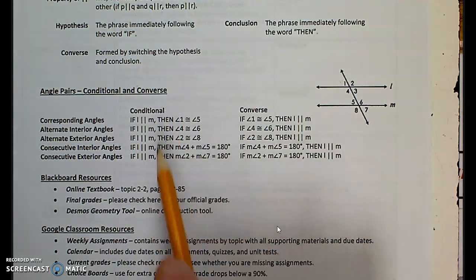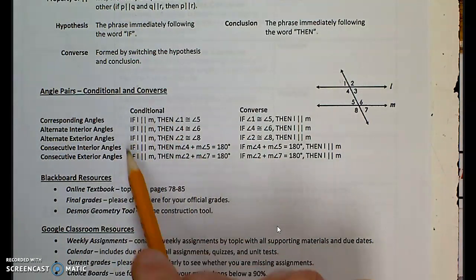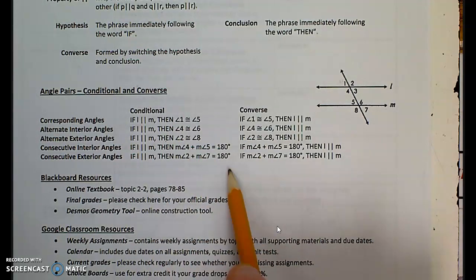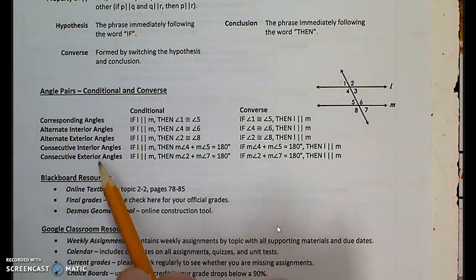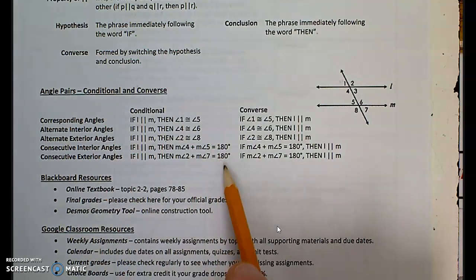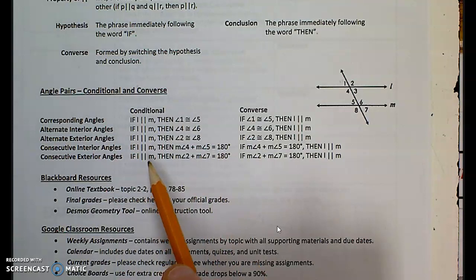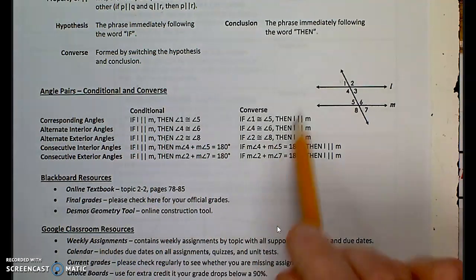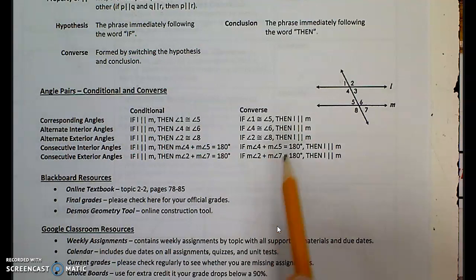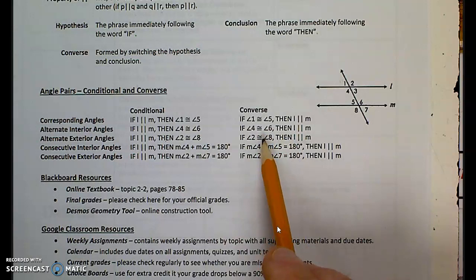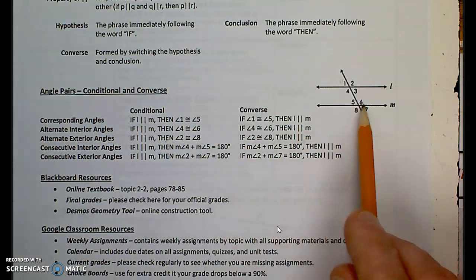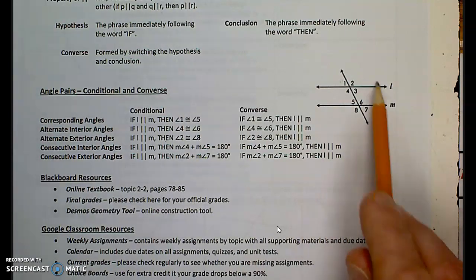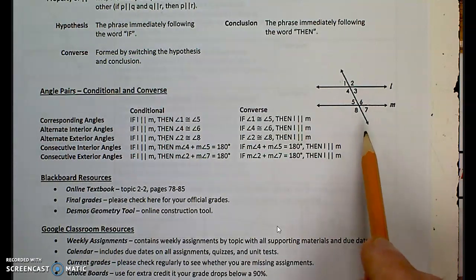In the previous packet we worked with the conditional: if the lines are parallel, then these angle pairs are congruent or supplementary. Consecutive or same-side interior and exterior angles are supplementary when lines are parallel — not congruent, but supplementary. In this packet we focus on the converse. We don't know that they're parallel, but we figure it out by measuring the angle pairs. For example, if angle 4 is congruent to angle 6 — alternate interior angles — we can conclude the two lines must be parallel.